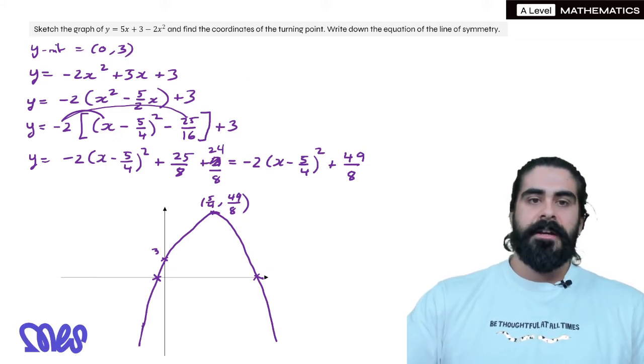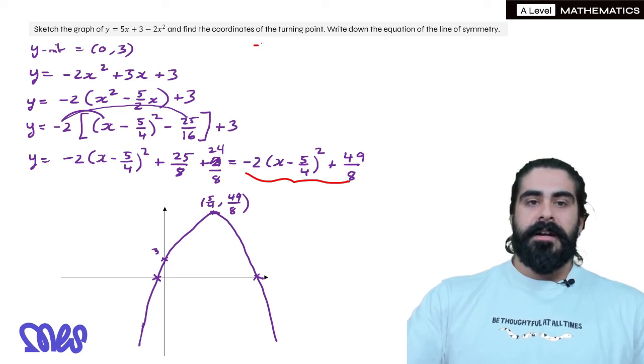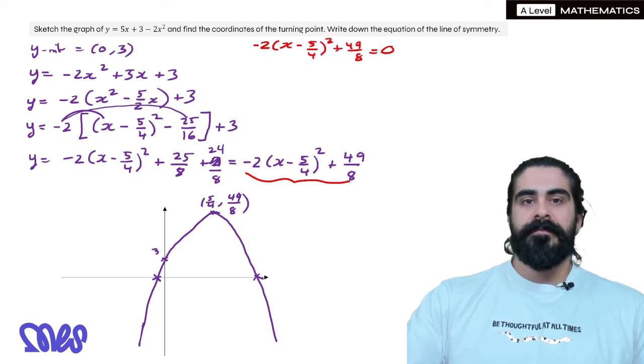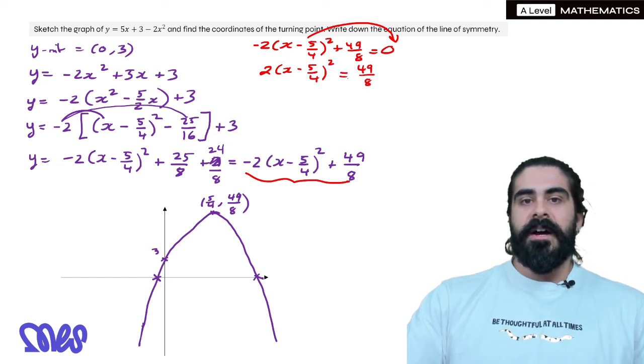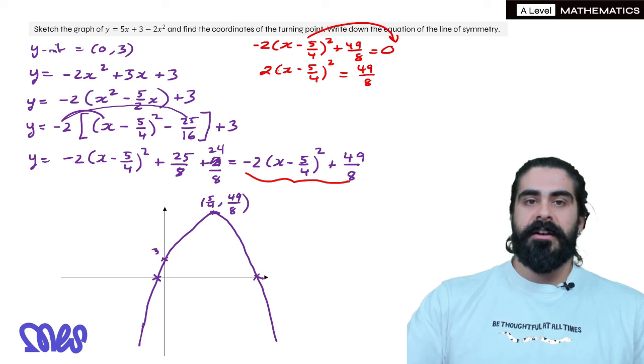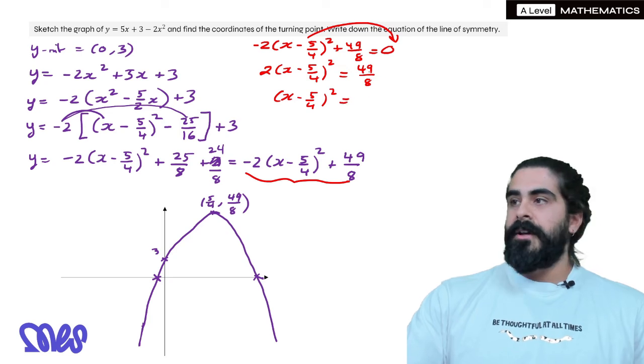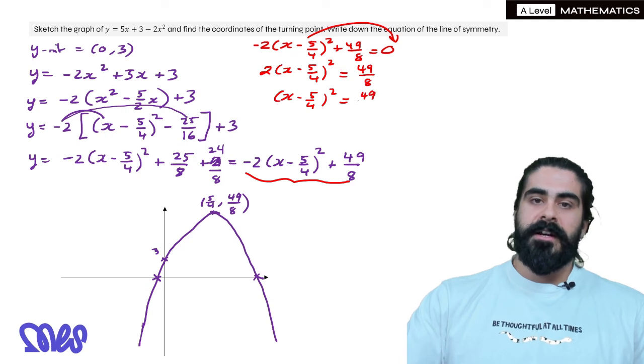So on the top here, you would make this equal 0. So you're going to say minus 2 x minus 5 over 4 squared plus 49 over 8 equals 0. Make it positive. So you'd get 2 lots of x minus 5 over 4 squared equals 49 over 8. Divide both sides by 2 to cancel out this coefficient of 2. We'd get x minus 5 over 4 squared equals then 49 over 8. When you divide that by 2, you get 49 over 16.